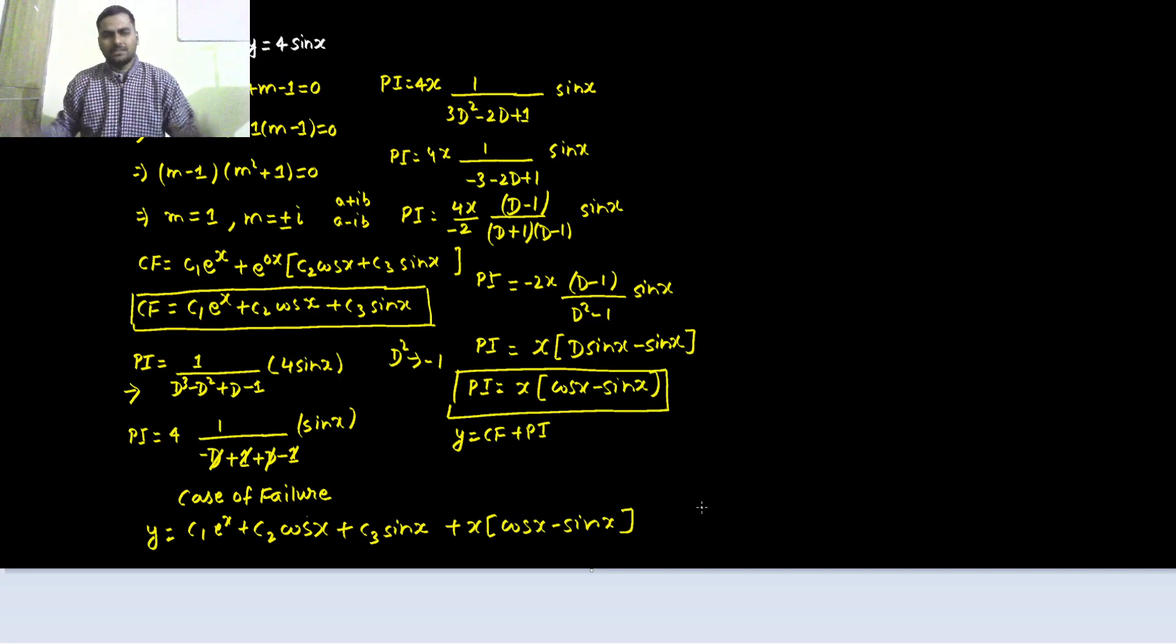Now it's fine. So you summarize it carefully, that's how summarization helps us. Then we went on to find the particular integral. Case of failure was there, multiply by x outside the operator and differentiate the denominator. Every time case of failure comes do the same thing. That's it from my side. For more problems you can visit the playlist which is ordinary differential equations. Thanks again.